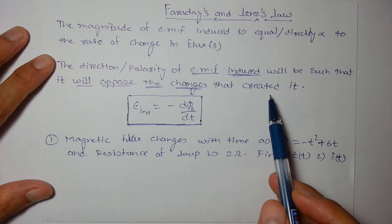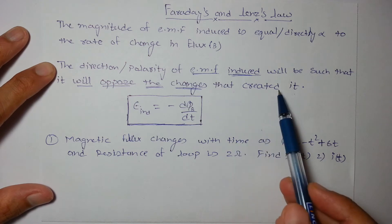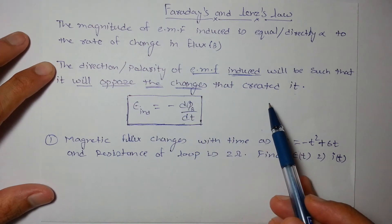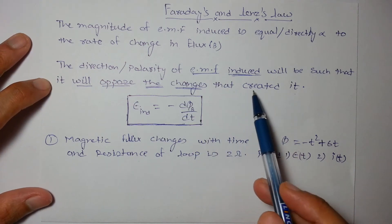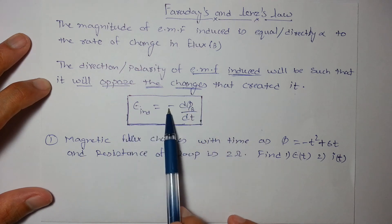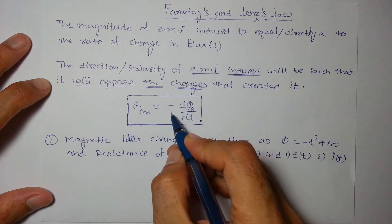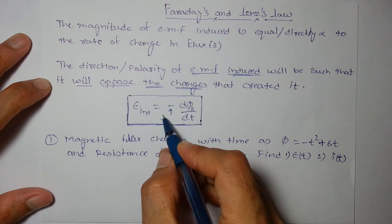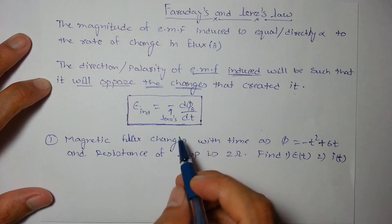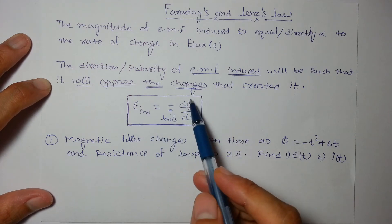It doesn't like changes, so it always opposes the changes which created it. So that is EMF induced is minus dΦ/dt, and flux is magnetic. This negative sign is Lenz's law. The polarity will be as if it tries to oppose the changes.